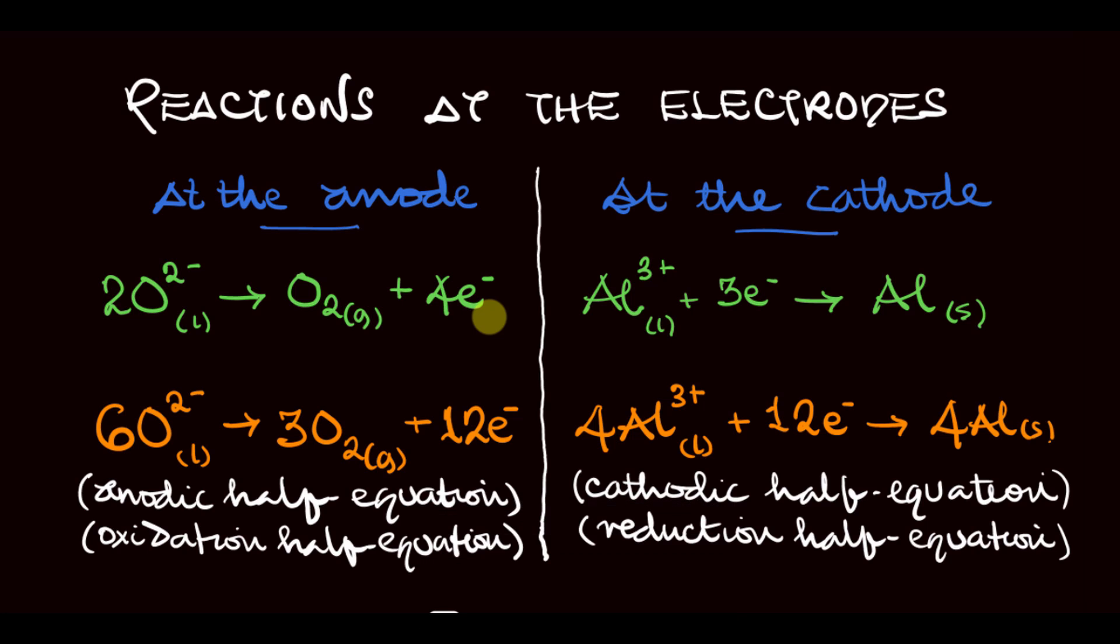But remember, electrolysis is an application of redox reaction, which is the transfer of electrons. The number of electrons lost must always be equal to the number of electrons gained. Here 4 electrons were lost while only 3 electrons were gained. So we multiply the anodic half equation by 3 and the cathodic half equation by 4 to balance the number of electrons transferred. That gives us 6O2- to 3O2 gas and 12 electrons. At the cathode we have 4Al3+ plus 12 electrons giving us 4 aluminum. This gives us the balanced half equations at the anode and the cathode.